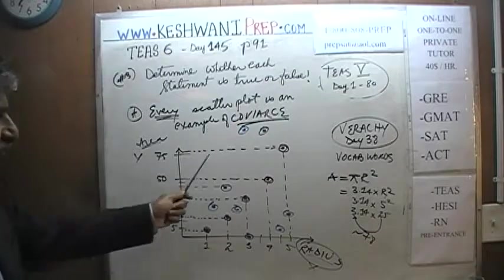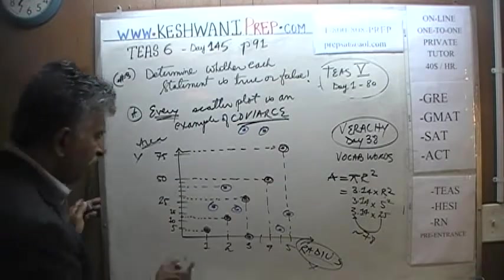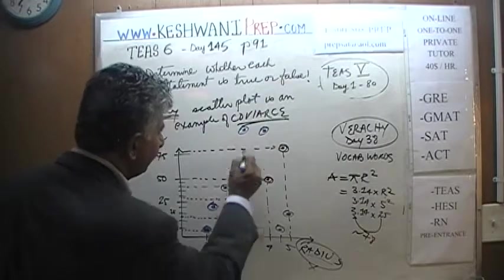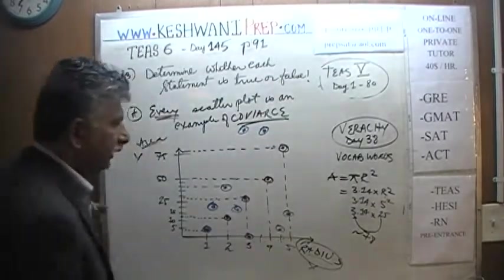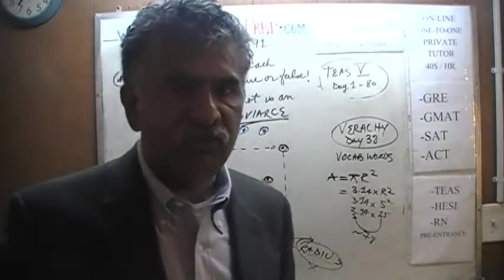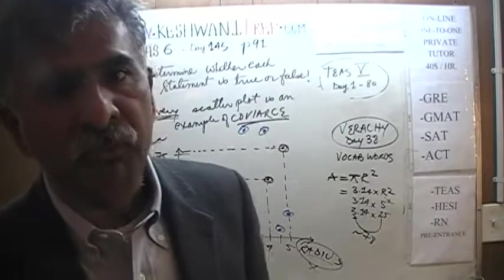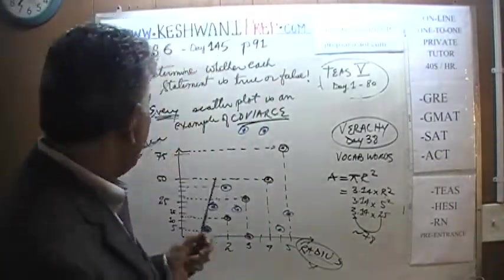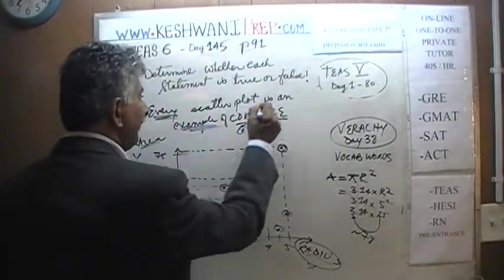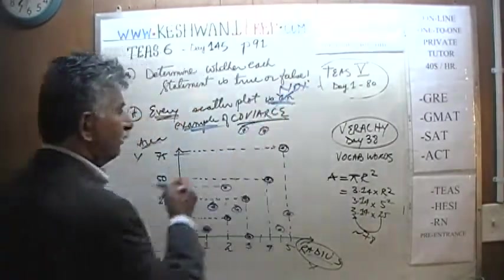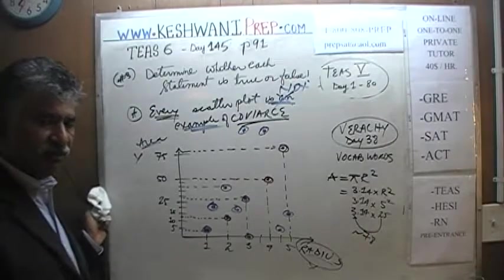This is a scatter plot — 8 points scattered on the graph. But there seems to be no rhythm or rhyme to it. This is a scatter plot, but it is not an example of covariance. A scatter plot is just a scatter plot — it just tells you how points are scattered.